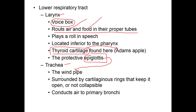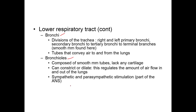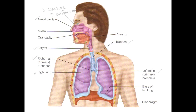The trachea, in lay terms, is your windpipe — this is where air actually comes in and out of the lungs. The pipe remains open because of cartilage so it does not collapse. The trachea then splits into the right and left bronchi.